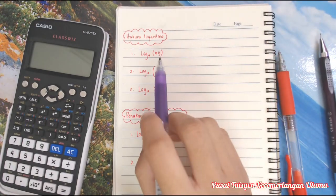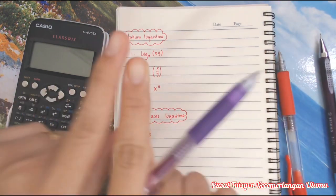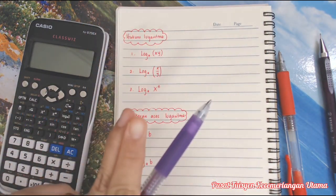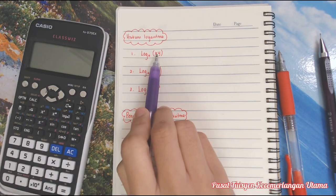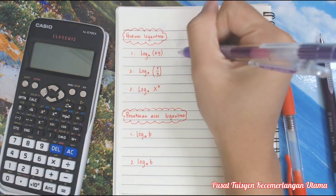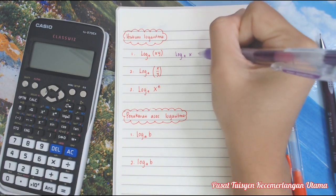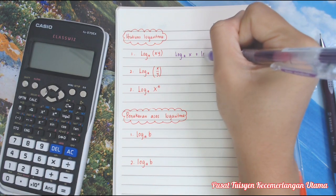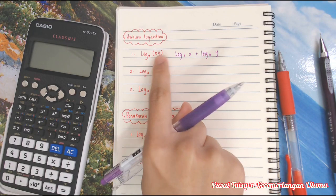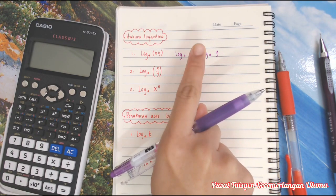Dia sama dengan index. Macam awak tengok, x dengan y ni, dia tak ada apa-apa kan? Dia gabung. Tak ada apa-apa kat tengah-tengah tu, maksudnya dia adalah darab. Kalau darab, dalam index dia jadi tambah. Log a x tambah log a y. Sebab darab, jadi awak kena jadikan dia tambah.